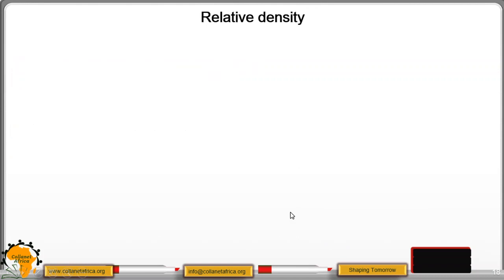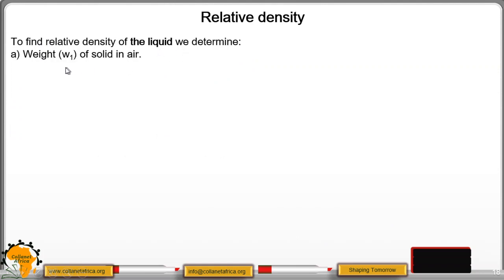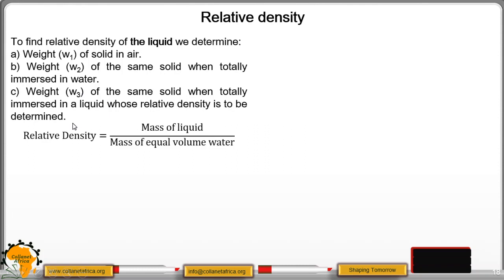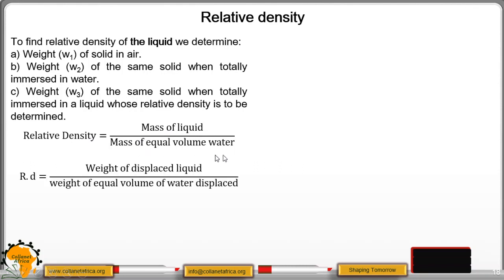To find the relative density of a liquid, we determine: W1 — weight of a solid in air; W2 — weight of the same solid totally immersed in water; W3 — weight of the same solid totally immersed in the liquid whose relative density is to be determined. Relative density equals mass of liquid divided by mass of equal volume of water, which equals weight of displaced liquid divided by weight of equal volume of water displaced.